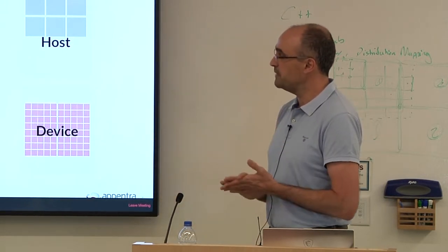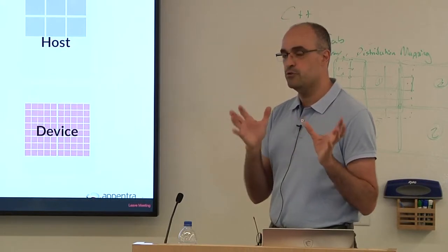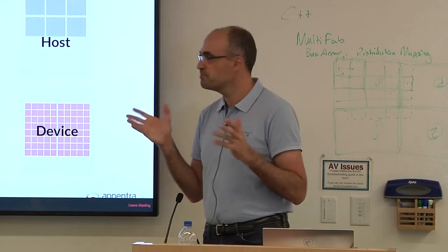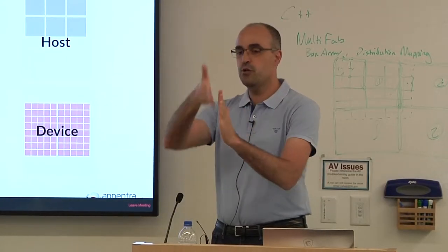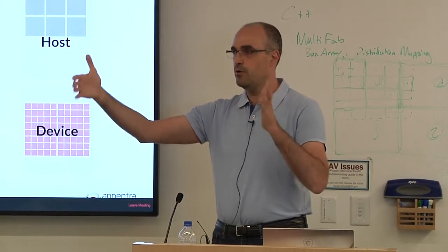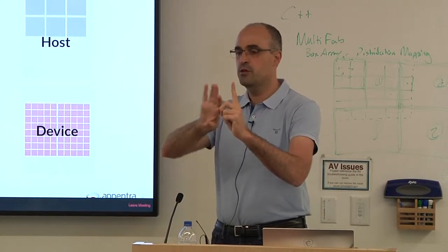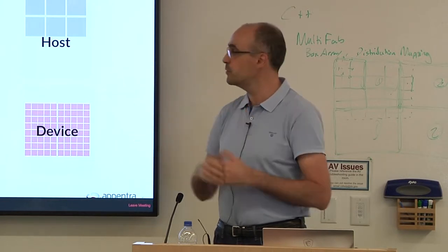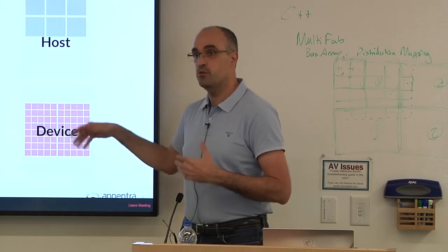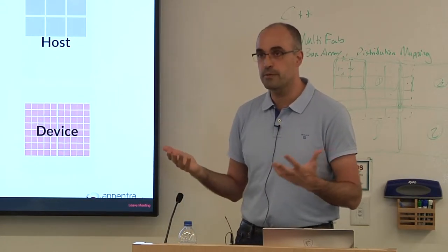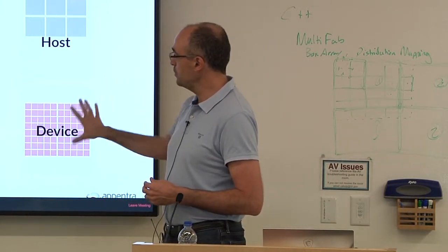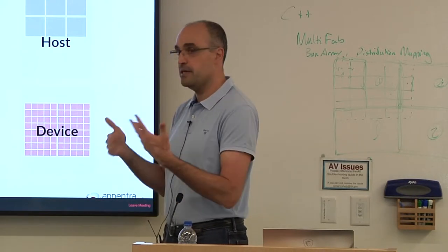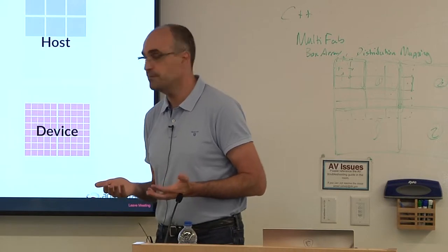Vector instructions: if you execute one instruction on a vector unit with four lanes, you are only using one out of four floating-point units. With thousands of such units, running sequentially means you cannot achieve good or peak performance from GPU hardware. Do not run sequential code on the GPU because it will typically be slower or much slower than running simple multi-threaded code on the CPU.